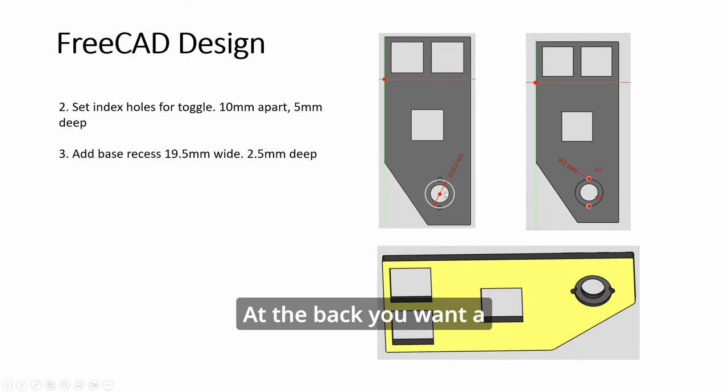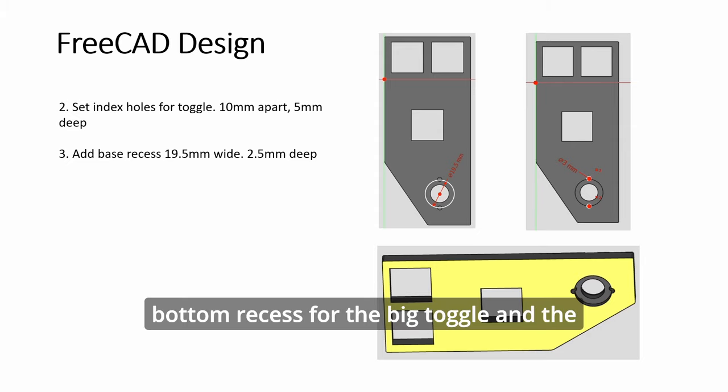At the back, you want a bottom recess for the big toggle and the locking holes. So it becomes like this.